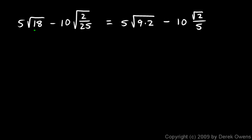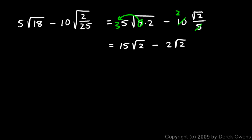All I did was take my 18 and rewrite it as 9 times 2, and then I took my 25 and square rooted it to get a 5 that's not under the radical. The 2 is still under the radical. So this 9 — the square root of 9 is 3 — I can pop it out front as a 3 outside the radical. That's 3 times 5, so this is 15 times the square root of 2. Over here, this 10 and this 5 simplify to a 2. So I have 15 square root of 2 minus 2 square root of 2. Those two terms can be combined — 15 of these minus 2 of these will be 13 of these. So 13 times the square root of 2, that's my answer.